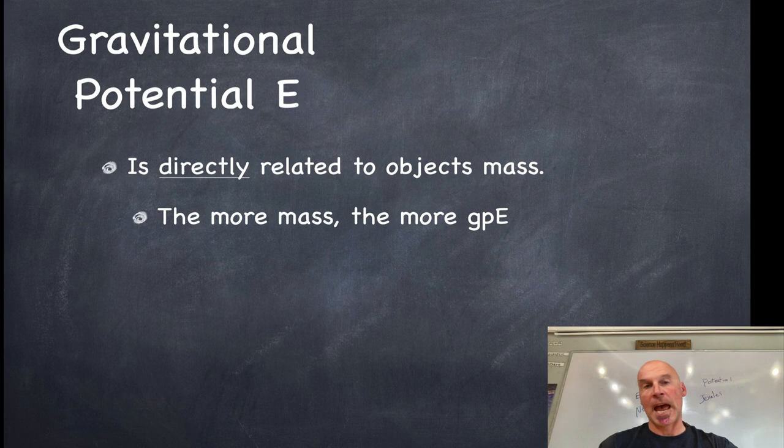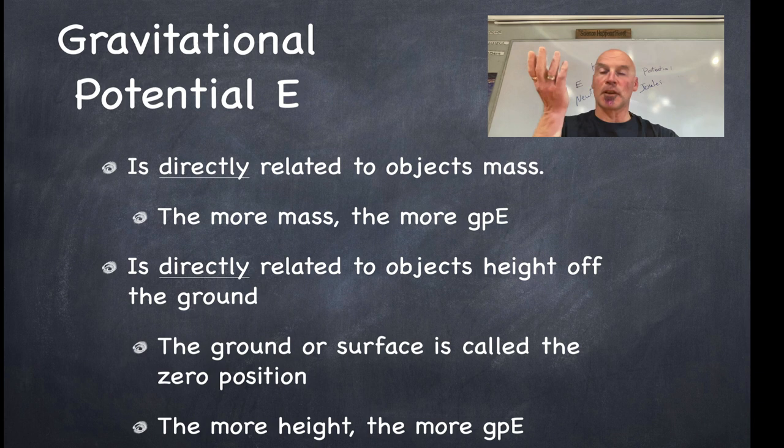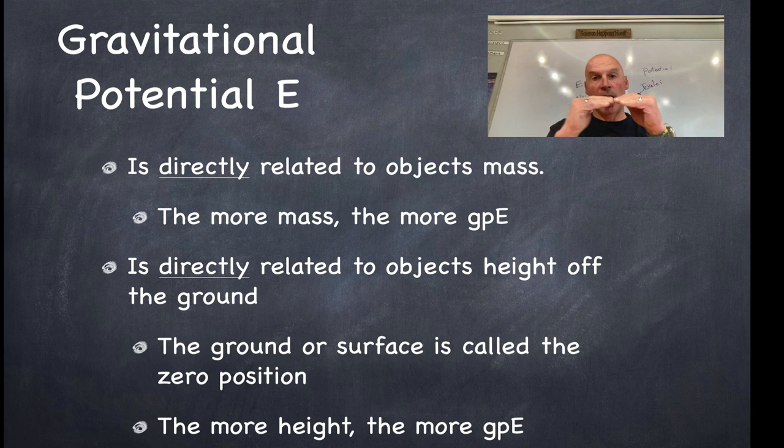And that, again, just being lazy, lazy scientist, GPE, gravitational potential energy. So it's also directly related to the object's height off the ground. So the ground or surface is called the zero position. And then, the more height this object has, its relative position, the more gravitational potential energy it has.